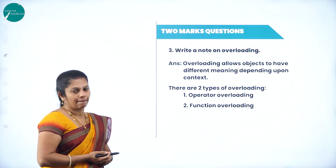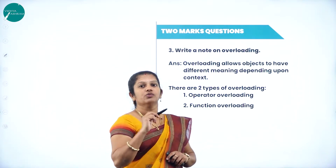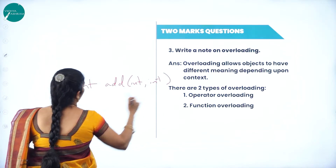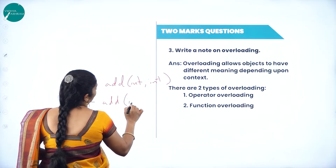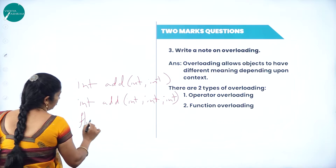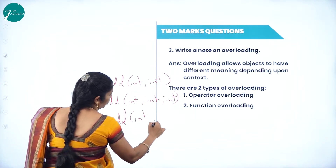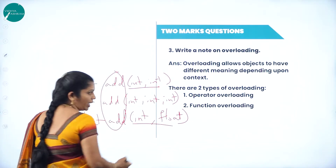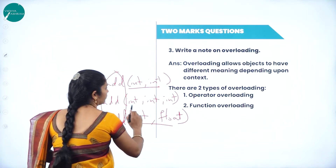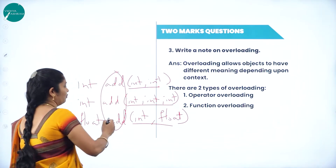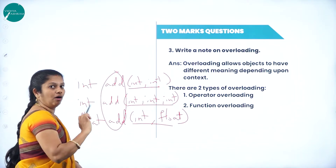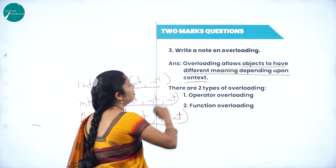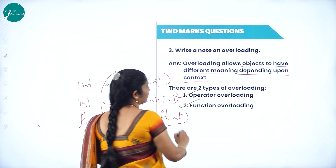When we come to overloading, there are two types: operator overloading and function overloading. For example, consider: int add(int, int), int add(int, int, int), and float add(int, float). The function names are the same, but they differ in number of arguments or data type of the argument. Overloading allows objects to have different meanings depending upon the context.